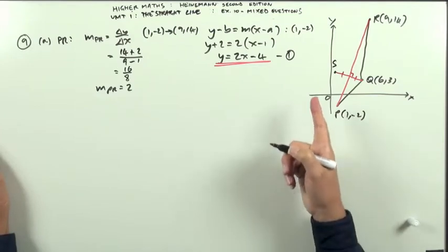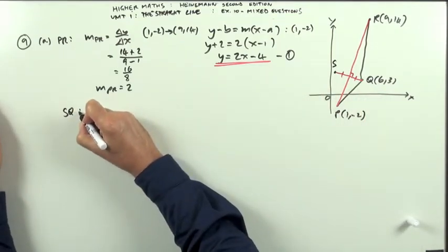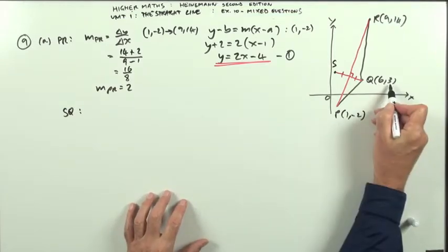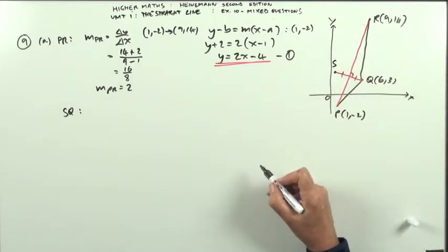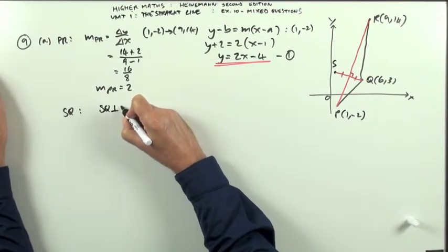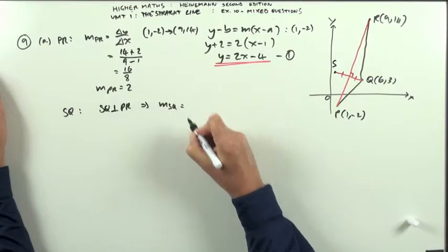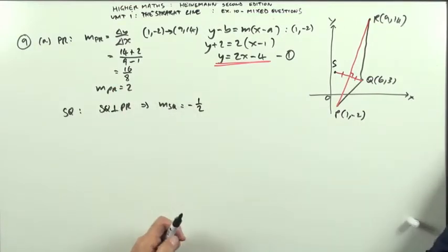Next part. So what about the equation of the other diagonal, SQ? Well, it's a line. I'll need to know two things about it. I'll need to know a point on it. I've got that and its gradient. Well, the diagonals of a kite are perpendicular. That means that SQ, I'll put a wee note, SQ is perpendicular to PR, which means that the gradient of SQ then would be the negative of the reciprocal, will be negative a half.